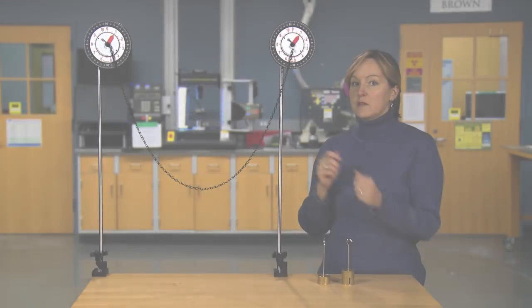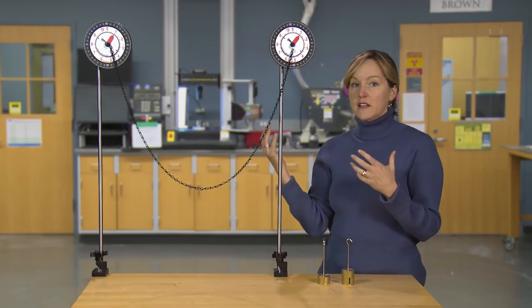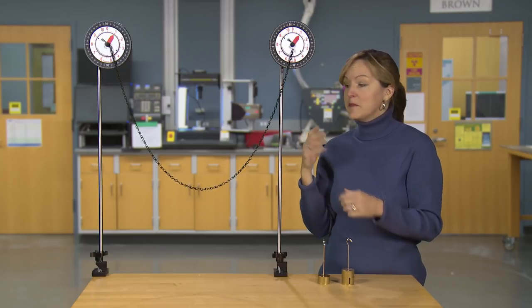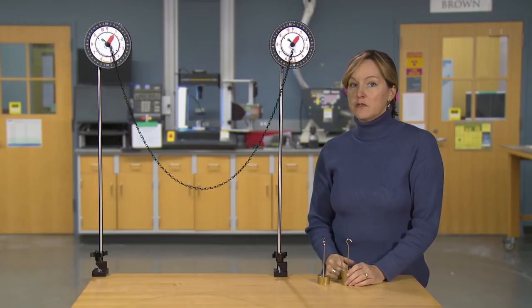A funicular form is always in tension. It makes it fairly easy to identify, so cables and ropes, we can't push on them. We can only pull on them, and that gives us our funicular form.